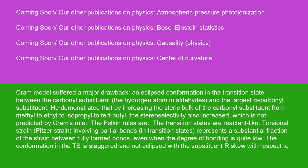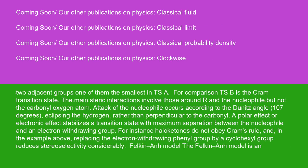The Felkin rules are: the transition states are reactant-like. Torsional strain (Pitzer strain) involving partial bonds and transition states represents a substantial fraction of the strain between fully formed bonds, even when the degree of bonding is quite low. The conformation in the TS is staggered and not eclipsed, with the substituent skew with respect to two adjacent groups, one of them the smallest, in TSA. For comparison, TS-B is the Cram transition state. The main steric interactions involve those around R and the nucleophile, but not the carbonyl oxygen atom. Attack of the nucleophile occurs according to the Dunitz angle (107 degrees), eclipsing the hydrogen rather than perpendicular to the carbonyl.